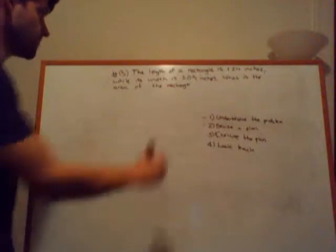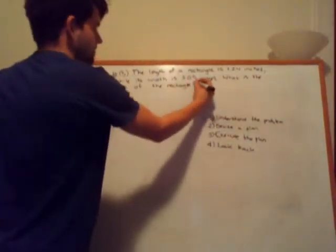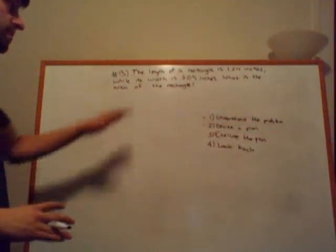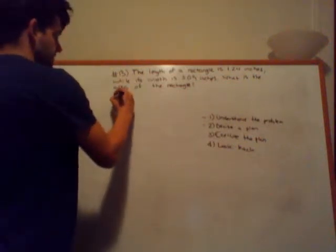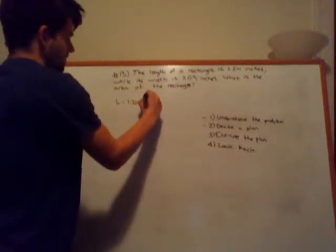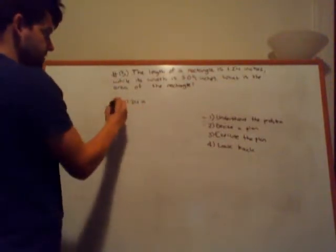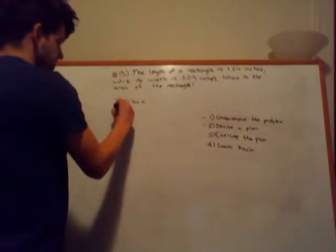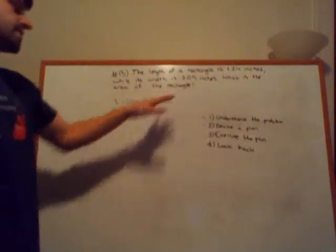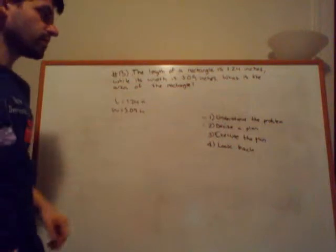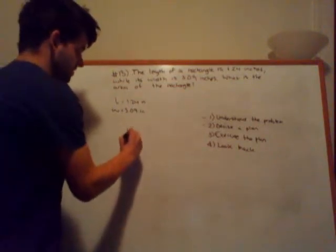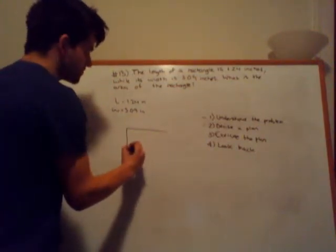Going with our plan here. Understanding the problem. So, the length of the rectangle is 1.24 inches. I will define a variable right from the get-go. The length is equal to 1.24 inches. I'm going to shorthand inches with i-n here. While the width is 3.09 inches. Now, the question asks, what is the area of the rectangle? So, now we understand the problem. One way that you can also better understand these kind of word problems is drawing pictures. Drawing pictures works wonders with these types of questions because they really allow you to visualize what's going on.